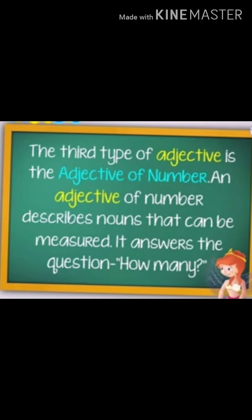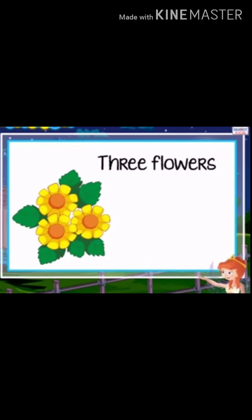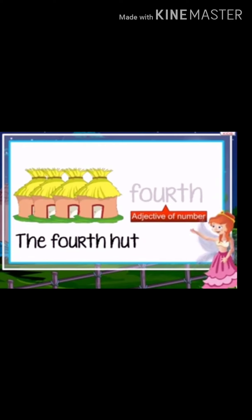The third kind of adjectives is the adjectives of number. They describe nouns that can be measured. It answers the question, how many? For example, three flowers, fourth, fifth. So, all cardinals and ordinal numbers like three, fourth, fifth are also adjectives.